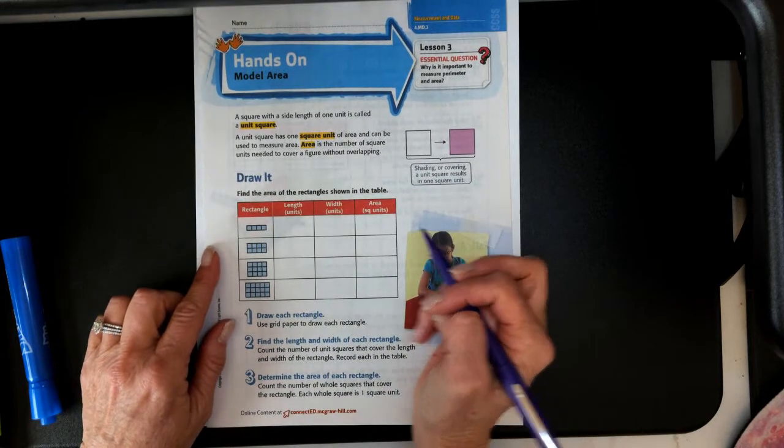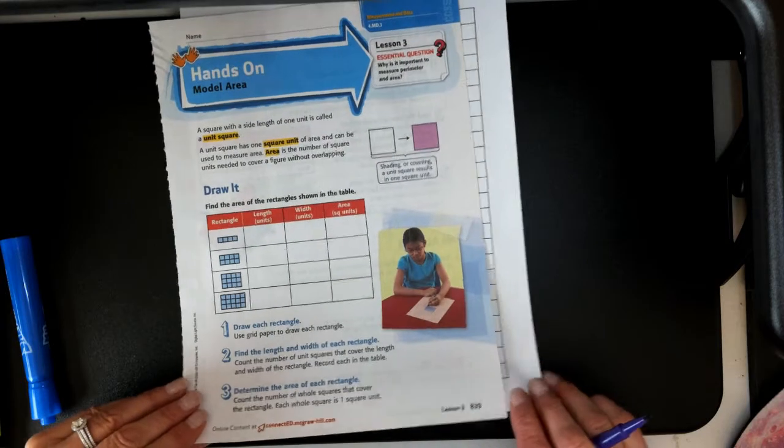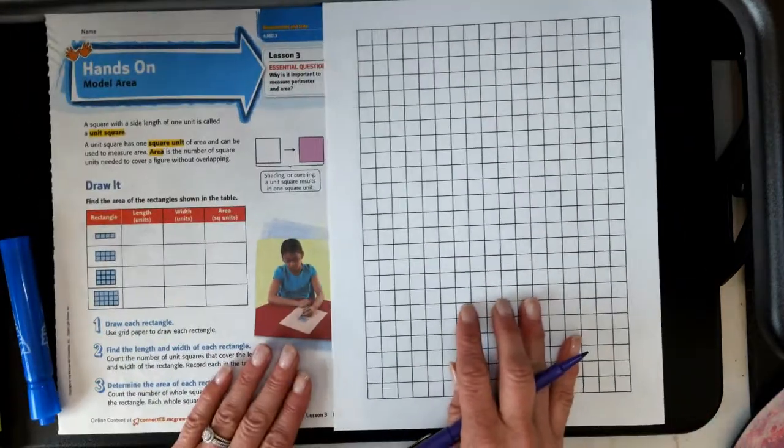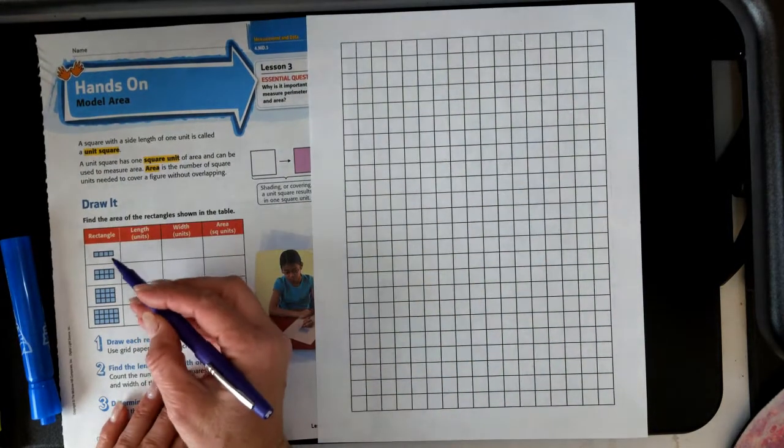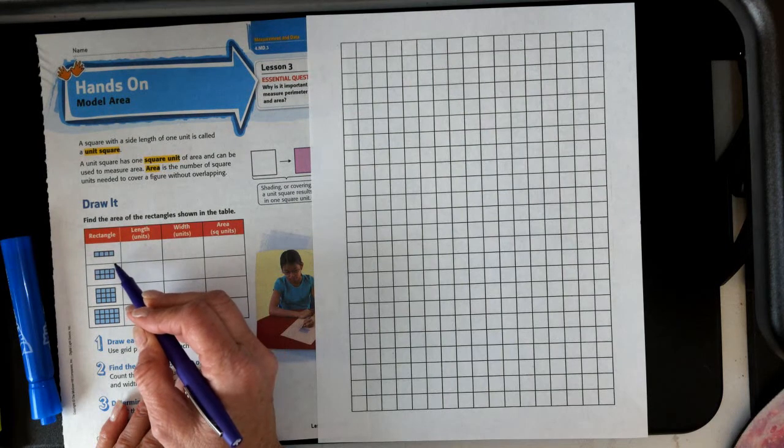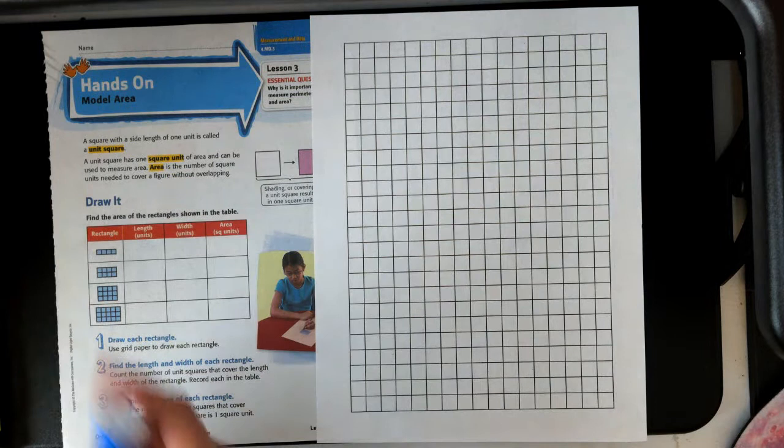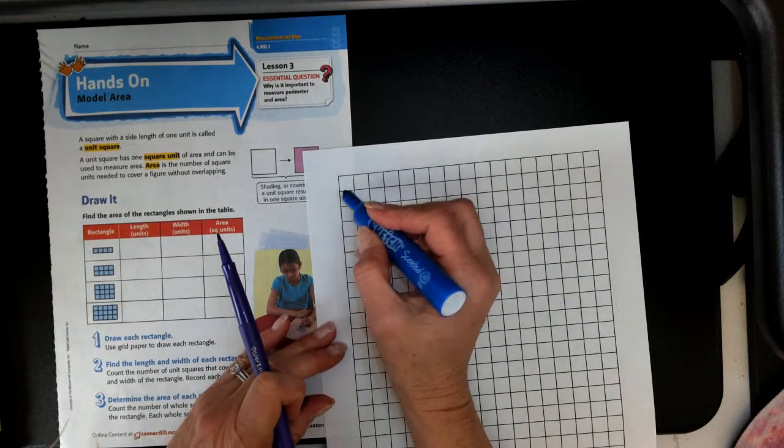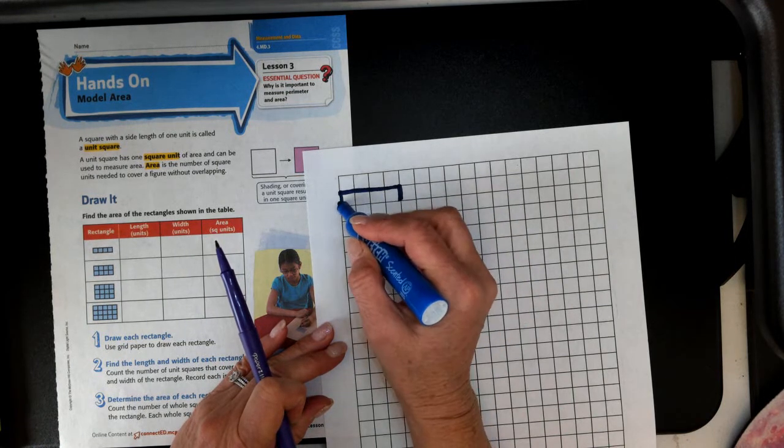We're going to start by drawing it. We're going to be using one centimeter grid paper, and you should have some. You'll be given some at school today. You're going to find the area of the rectangle here after drawing it on your paper. I'm going to take this, and it looks like it has four squares. So I'm going to draw one, two, three, four, and make an outline.